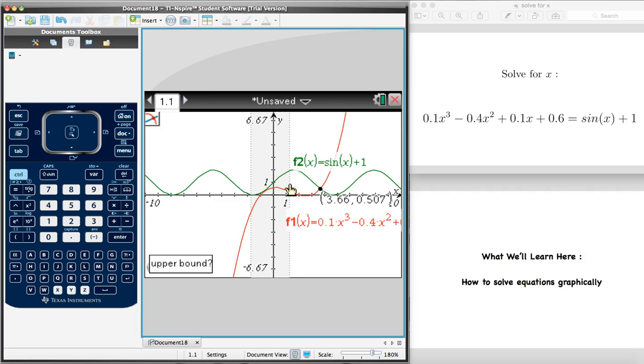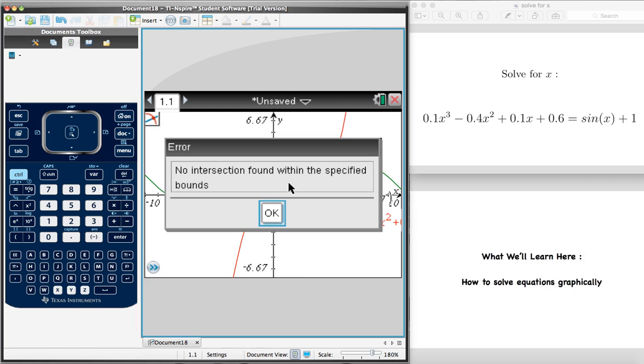Now, if we click to the right anywhere, if we click there, it'll try and find a solution in between these two values, or in that region. So if there is no solution, the calculator won't find one. So if I click, no intersection found, which means that the curves don't intersect, and therefore there's no other solution to this equation.